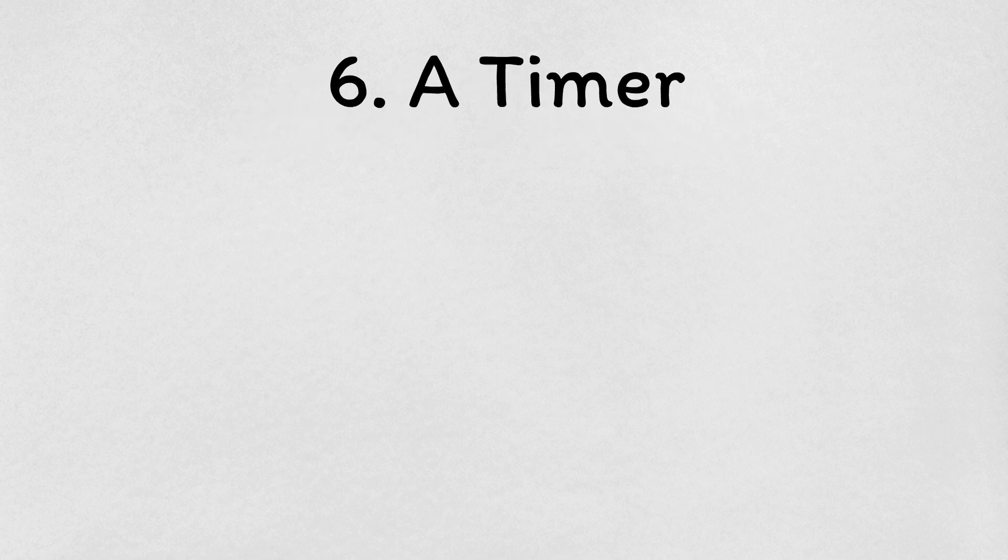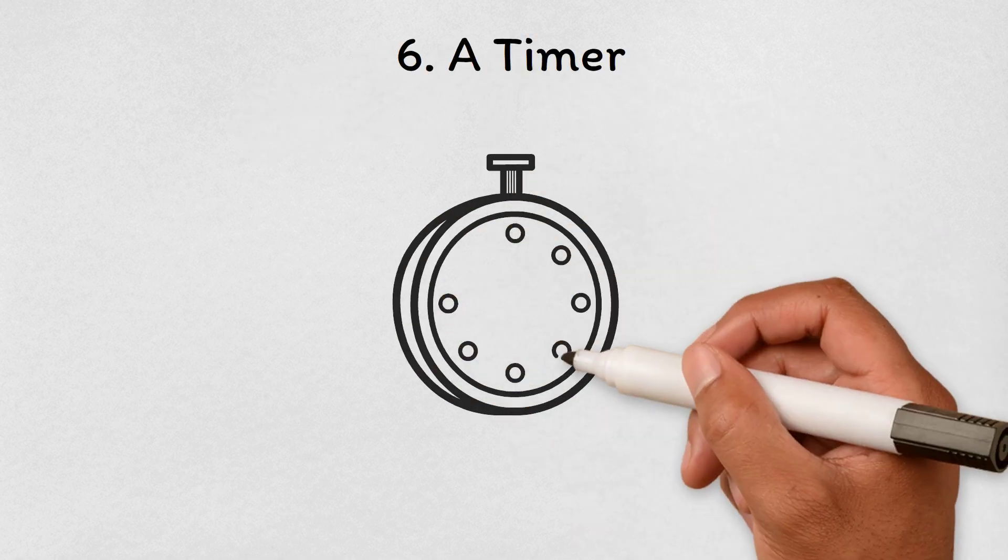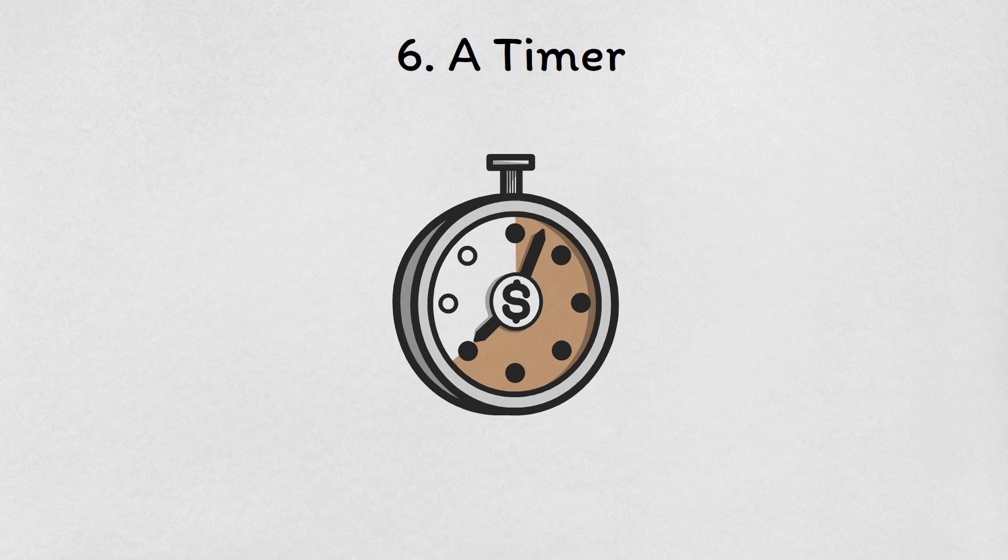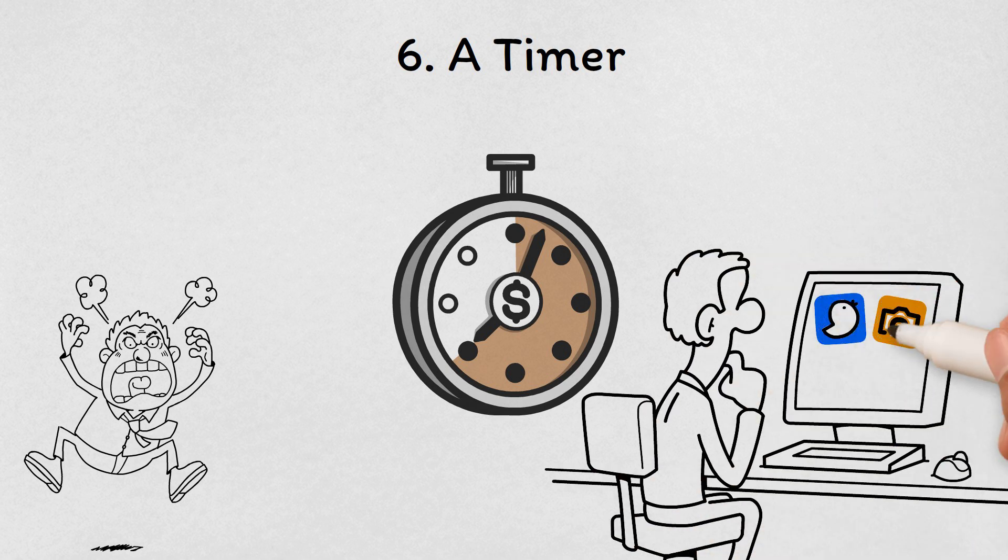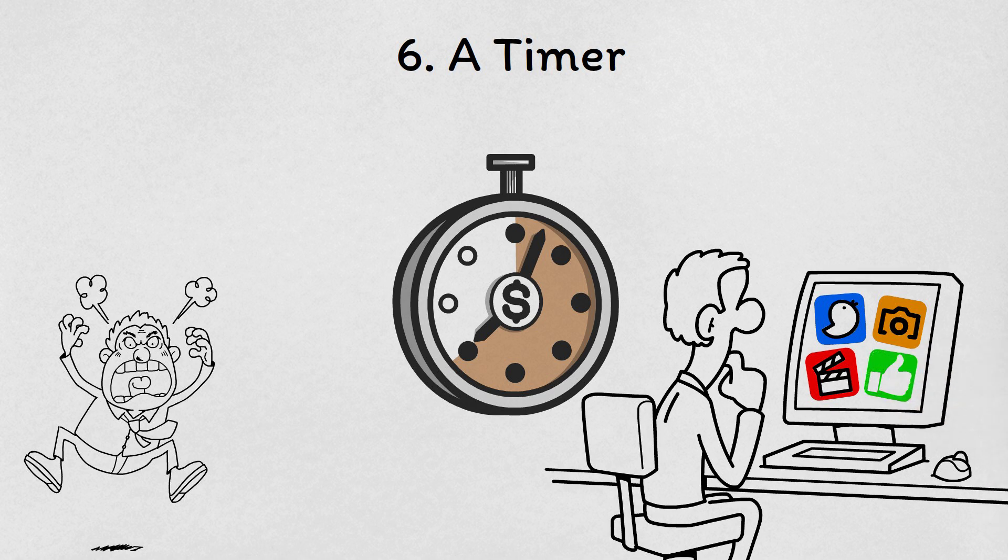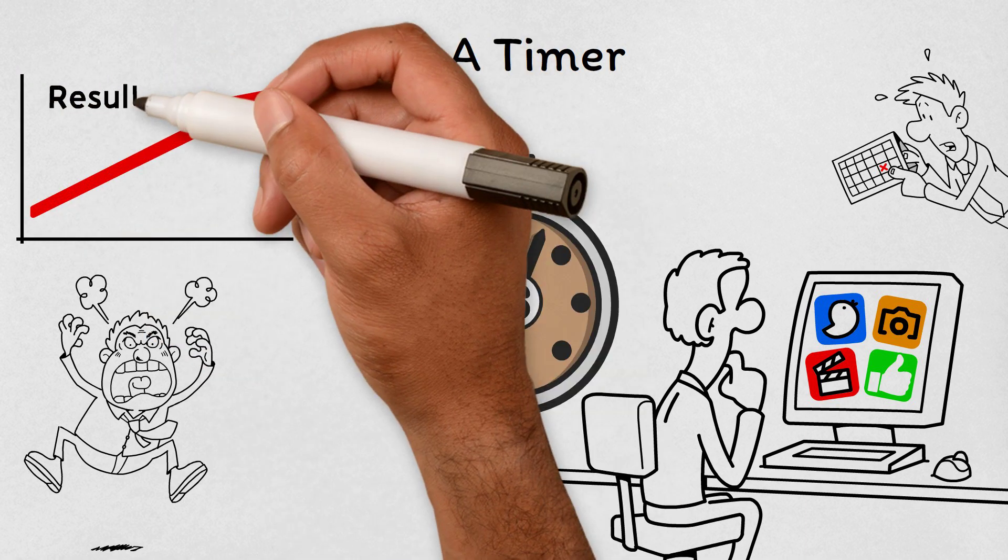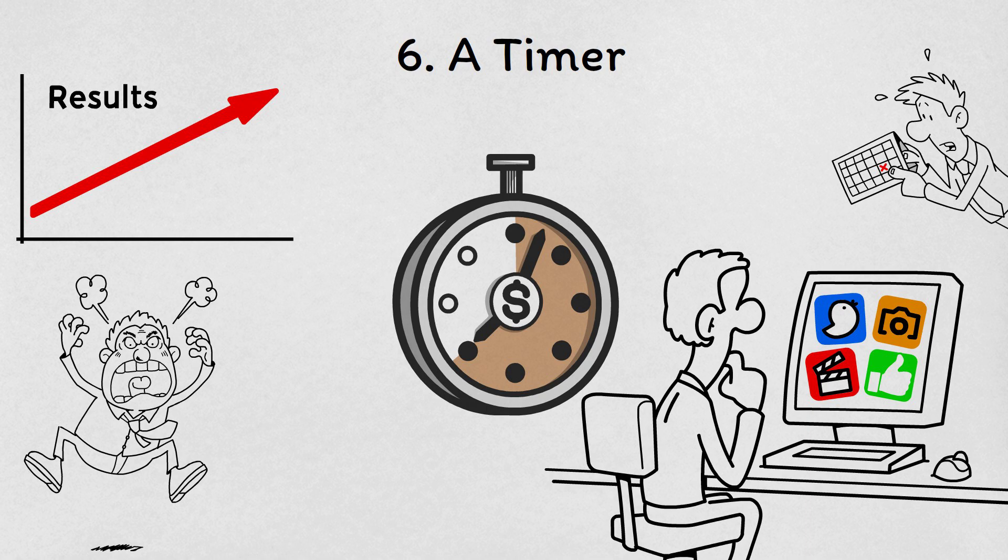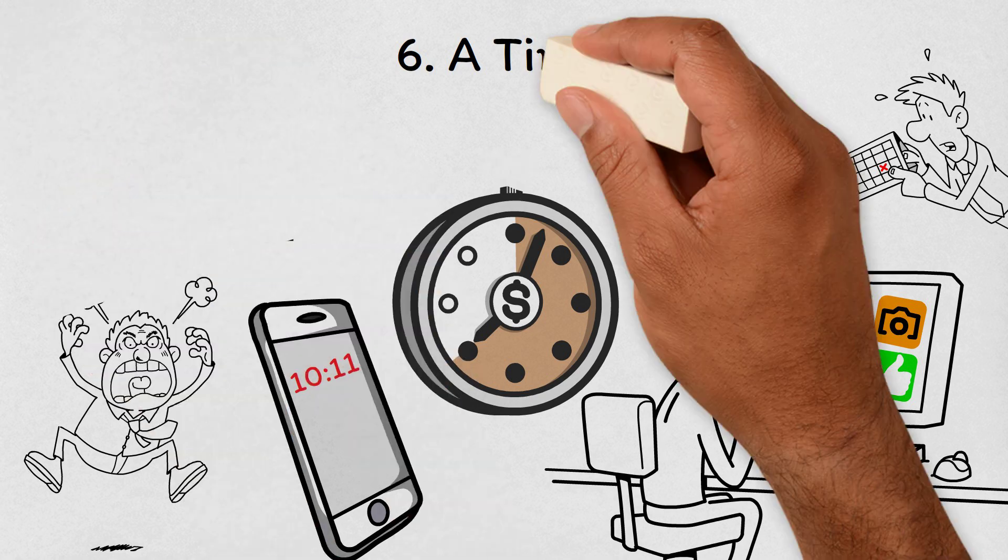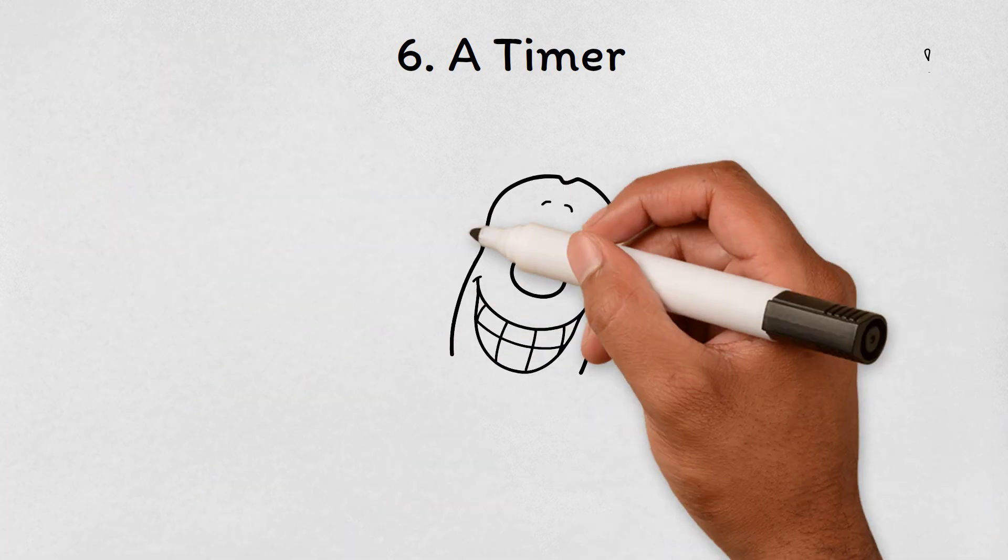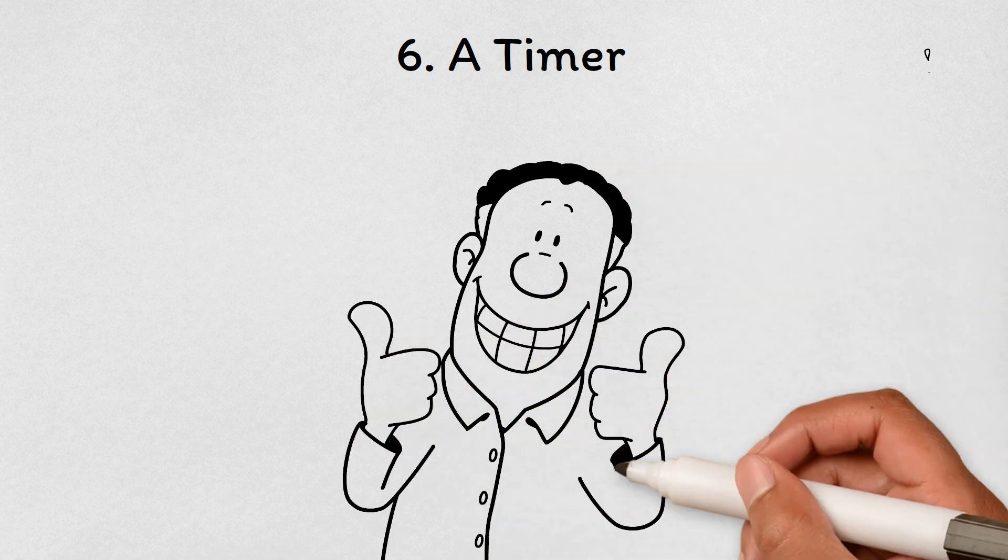A timer. Time management is crucial for productivity, whether you're working on a project, studying for an exam, or simply trying to stay focused. But it can be difficult to keep track of time when there are so many distractions and tasks vying for your attention. That's where a timer comes in. It's a simple yet powerful tool for managing your time and staying on track. With a timer, you can set clear goals and deadlines, measure your progress, and avoid getting lost in the endless abyss of tasks. Plus, there are so many versatile timer options available, from physical timers to digital apps that can cater to your specific needs and preferences. So if you're looking to boost your productivity and get more done in less time, try incorporating a timer into your daily routine.